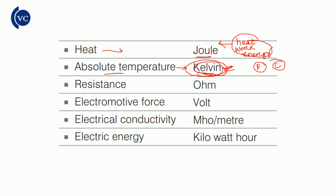Resistance — the symbol is R. The unit of resistance is Ohm. So the resistance symbol is R and the unit is Ohm.